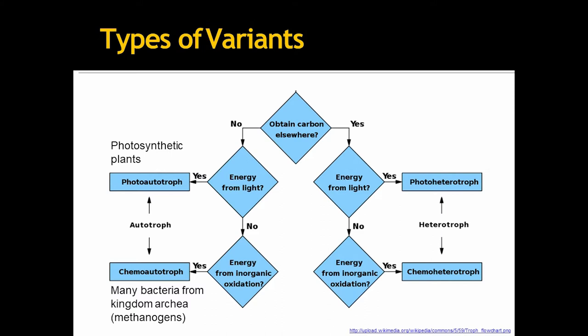Photoheterotrophs are those who get their energy from light but obtain their carbon from elsewhere. For example, a few specialized bacteria. And the last chemo-heterotrophs gets their energy from inorganic oxidation. For example, all animals.